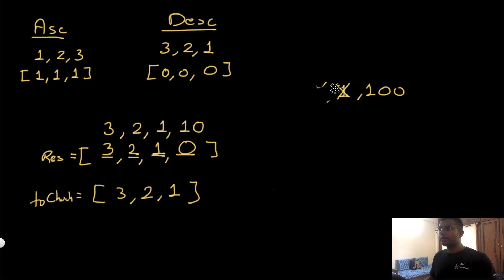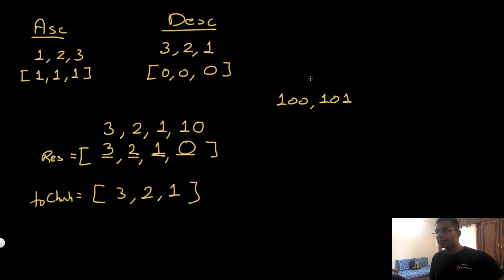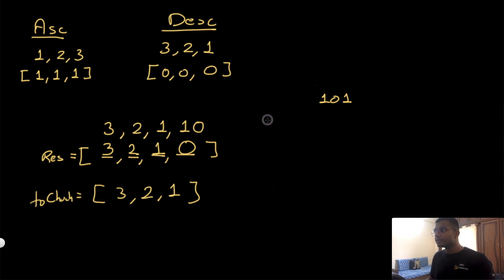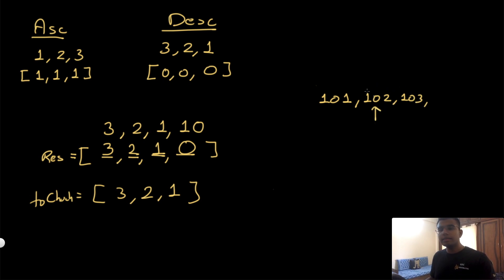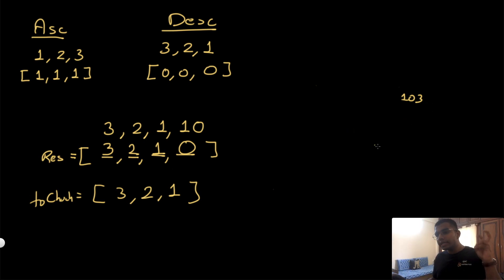Let's say we have more temperatures: after 3, 2, 1 we get 100 — now all three values less than 100 have an answer and get removed. Then 101 arrives, and 100 already has an answer. Then 102, then 103 — each new higher value gives the previous one an answer and removes it. No matter what, this 'to check' array is always going to be in descending order.